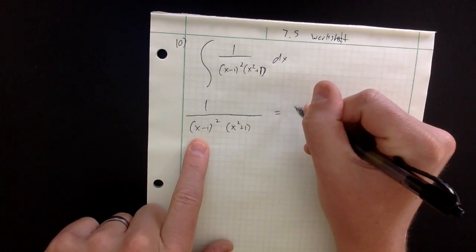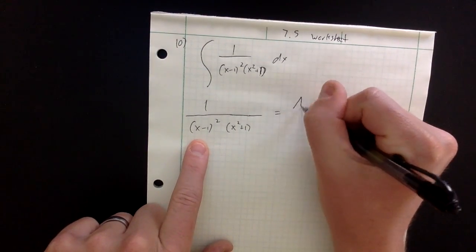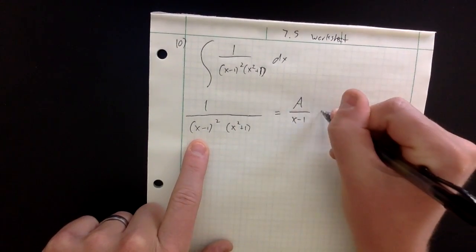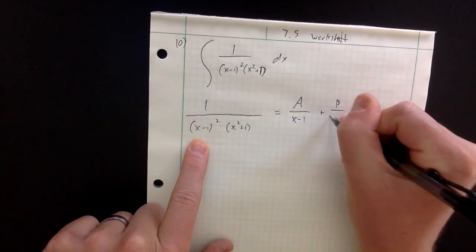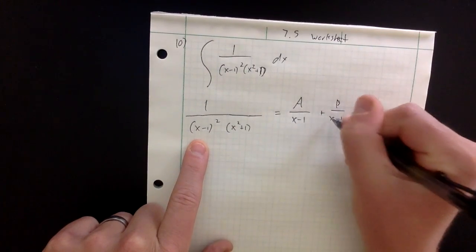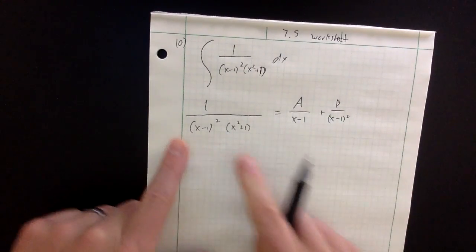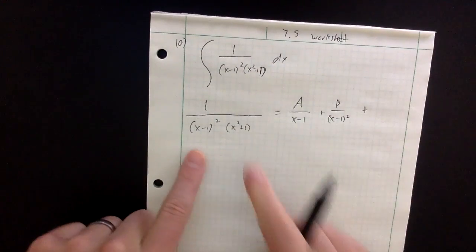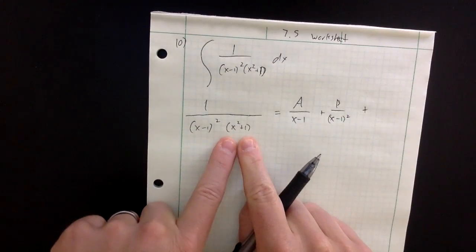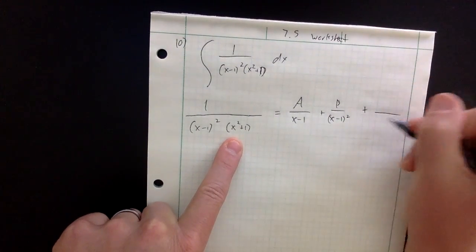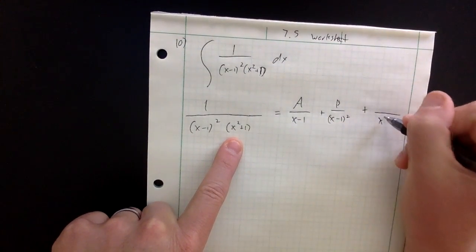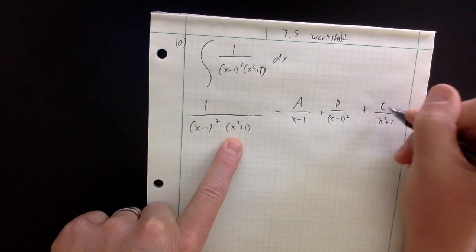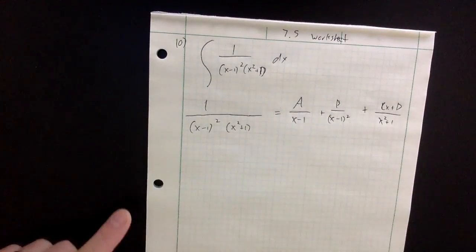The setup for repeated linear terms is to write this as A over (x minus 1) plus B over (x minus 1) squared. For the third term, I have the quadratic term x squared plus 1, and I need to have a Cx plus D in the numerator.